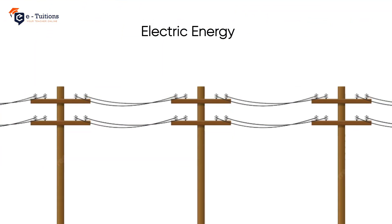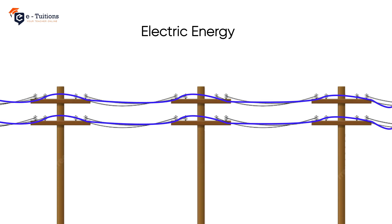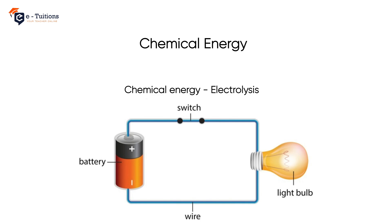Electric energy is carried by an electric current. Major sources of electrical energy are coal, water, wind, and nuclear. Chemical energy is energy stored in the bonds of chemical compounds, released during a chemical reaction. For example, chemical energy in a battery supplies electrical power by means of electrolysis. Chemical energy in food is converted by the body into mechanical energy.